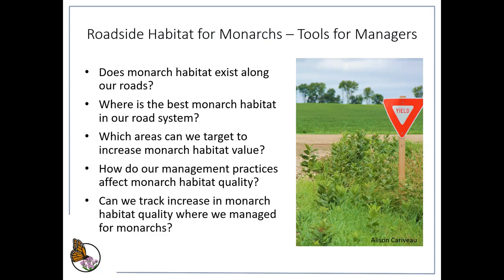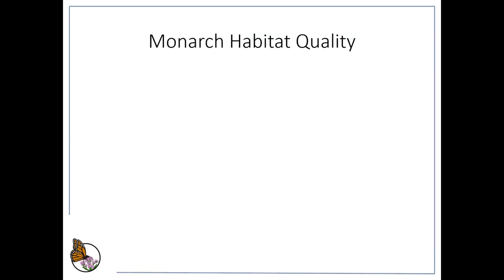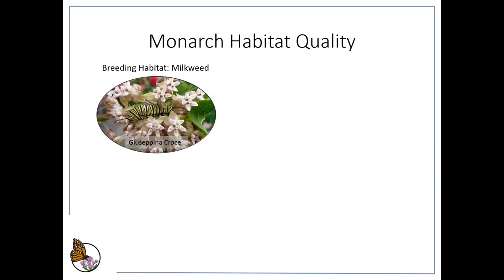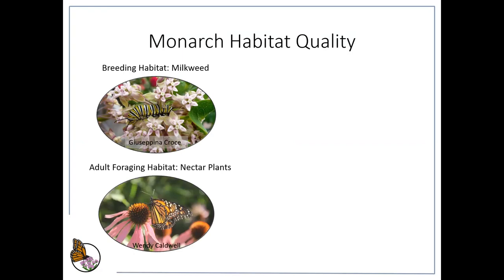We could also want to know if we can track increases in monarch habitat quality in response to those management actions, and we can do that with this tool. First, we all need the same definition of what monarch habitat quality is. For this roadside project we broke it into four main components. The first is breeding habitat — primarily milkweed — where eggs and larvae develop. Another important component is foraging habitat, which includes plants that provide nectar for foraging adult monarchs, and these flowers also provide habitat for many other insects and pollinators.